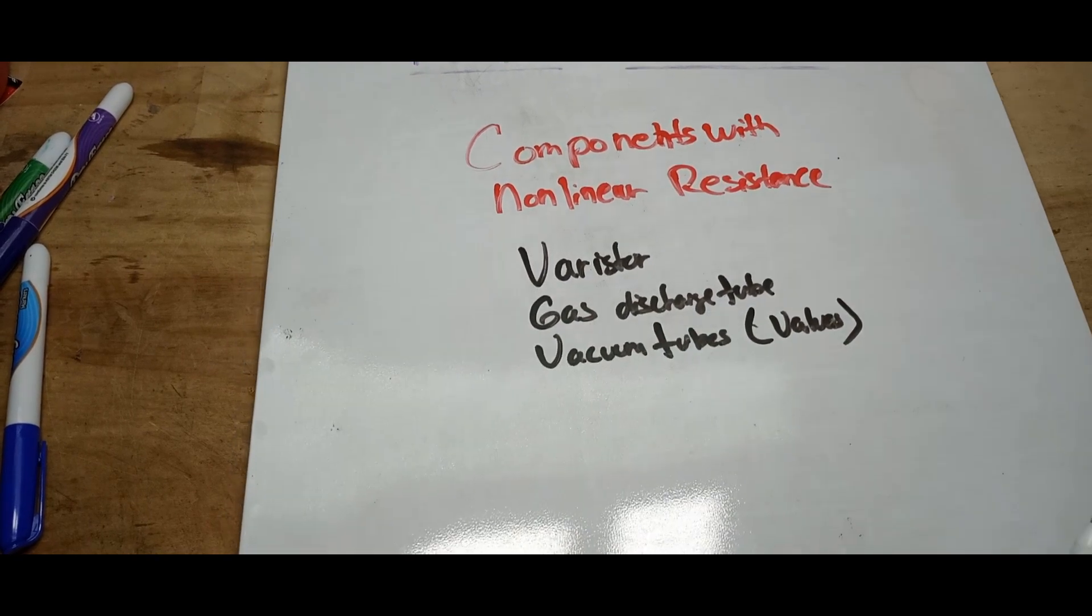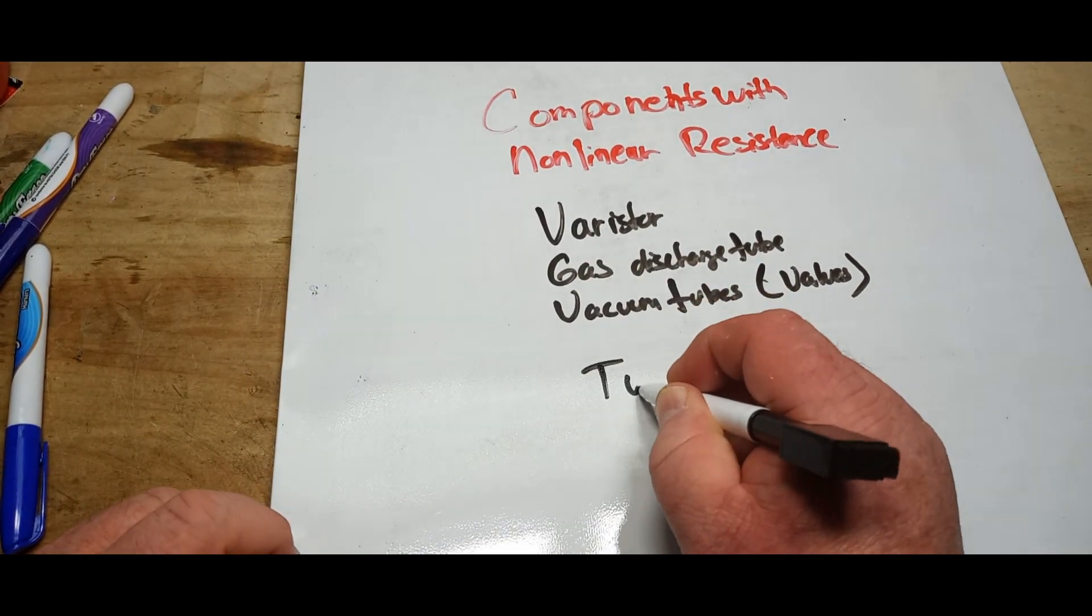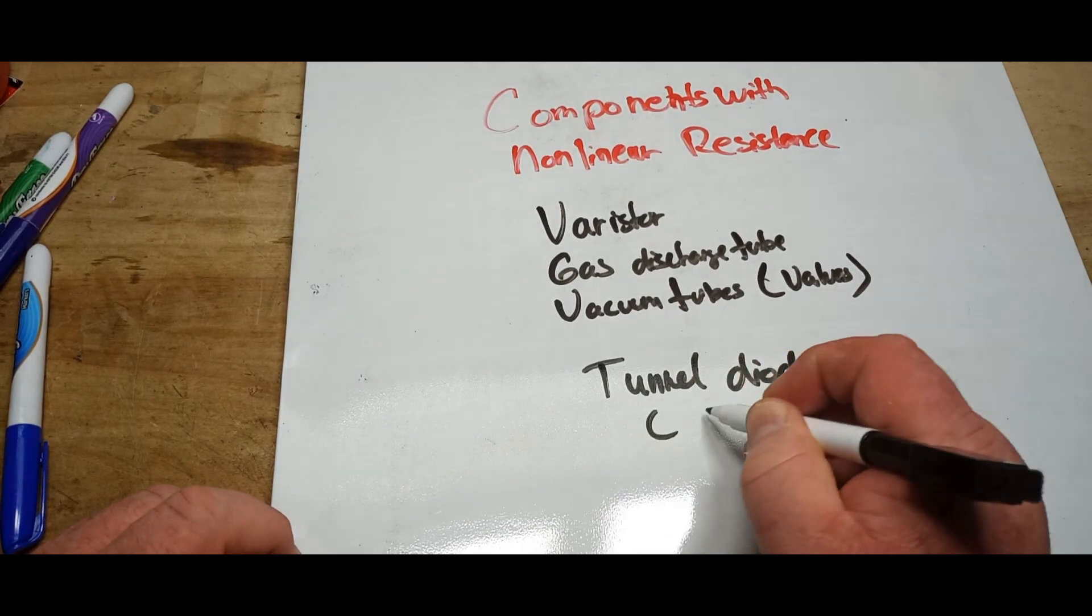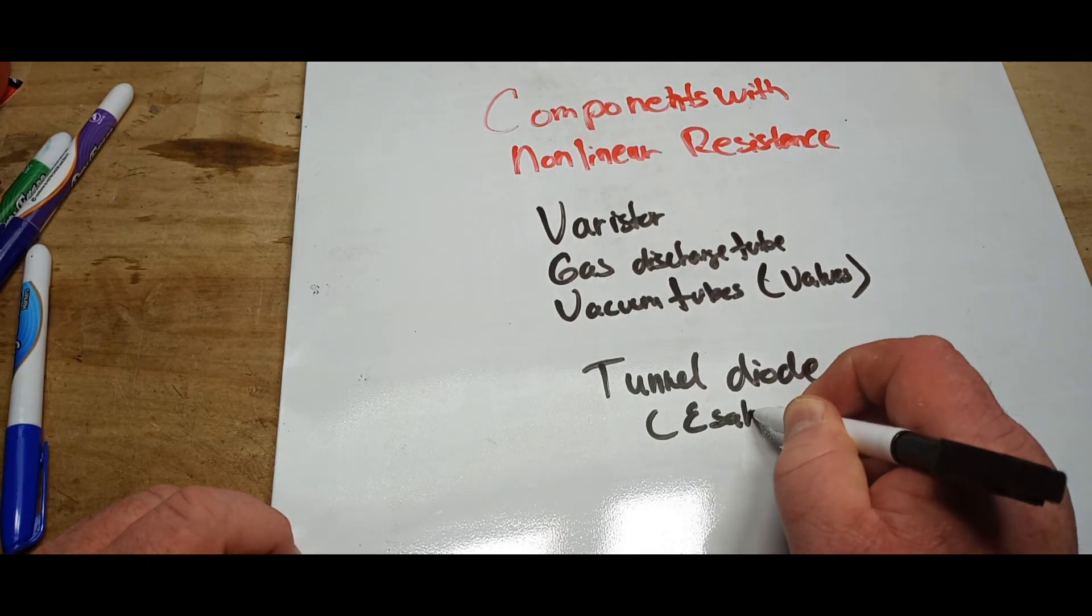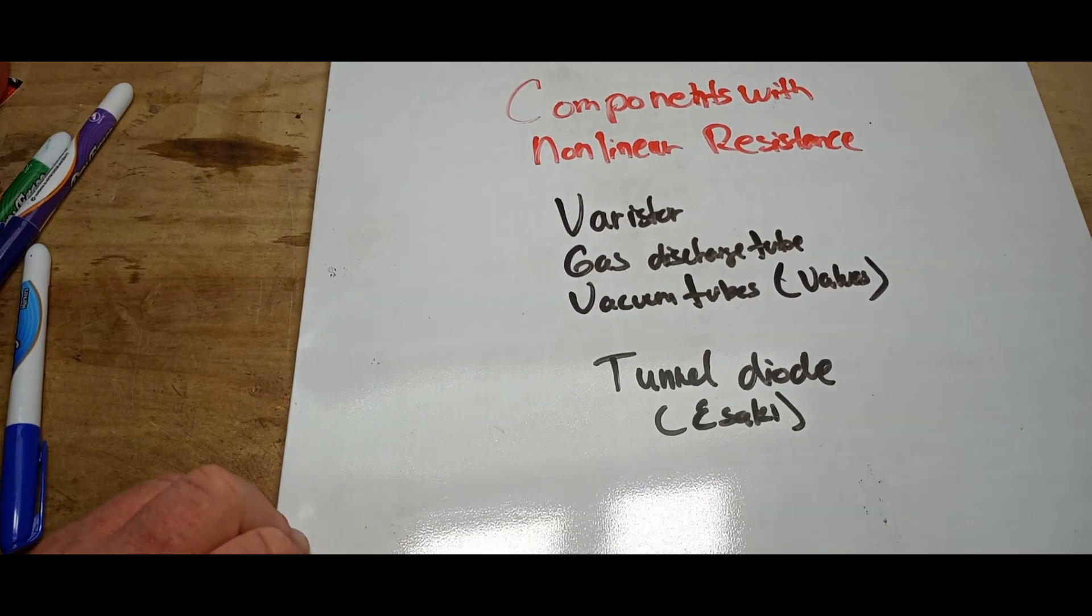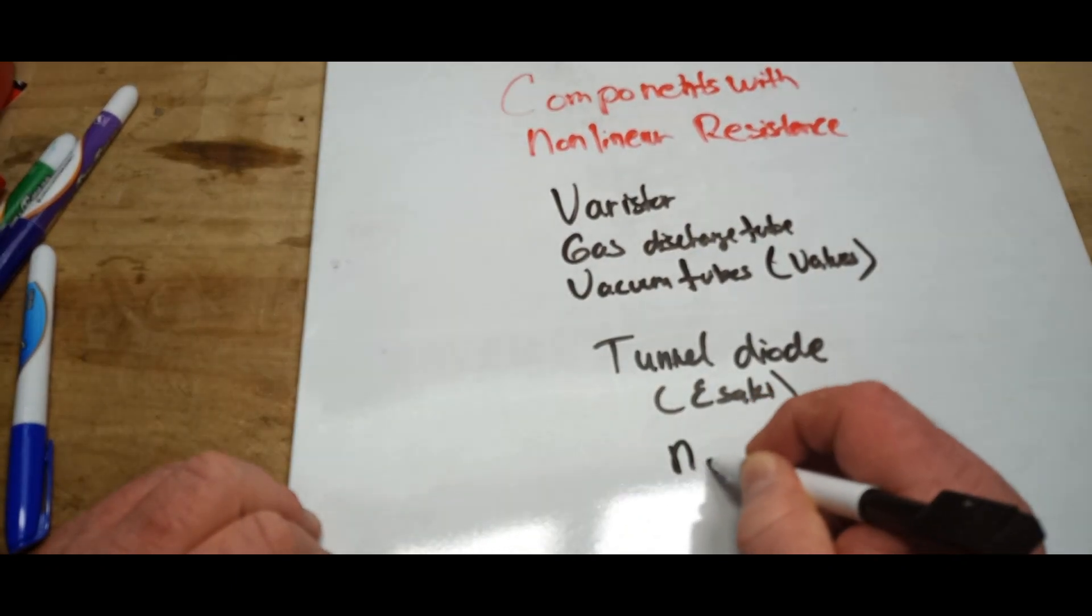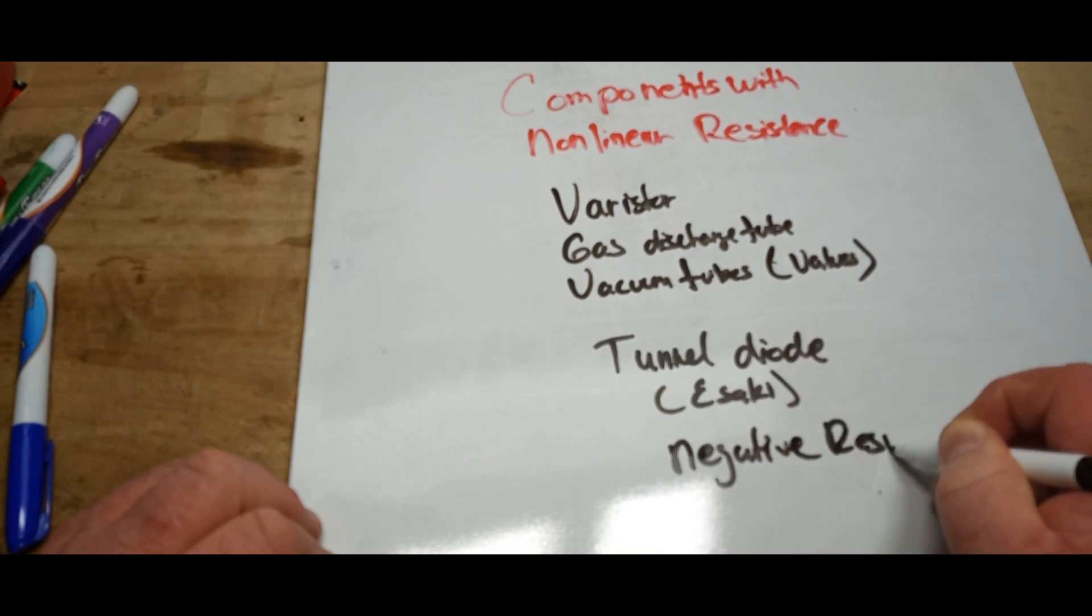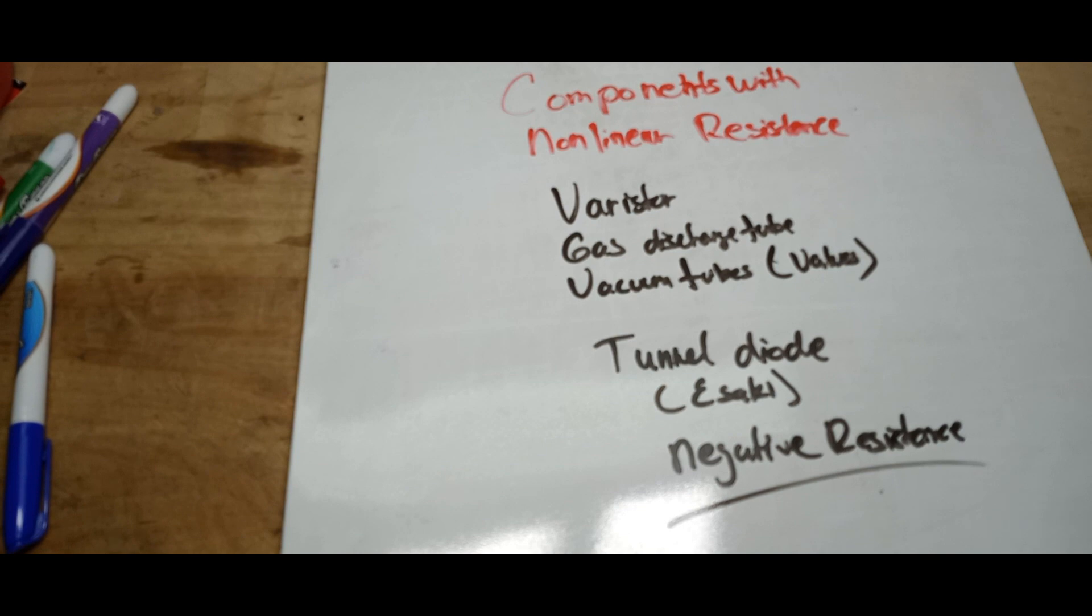There's even a component called a tunnel diode, or an Esaki, that will create negative resistance. That's some wild stuff right there, right? I mean that kind of defies the laws of physics.